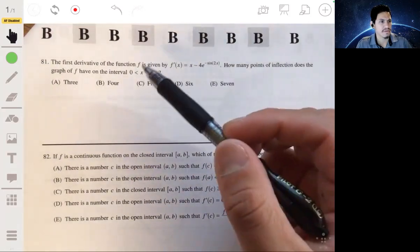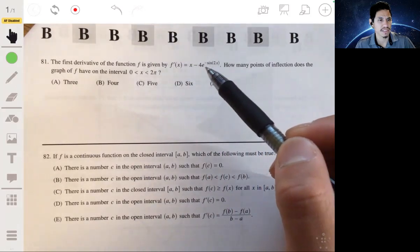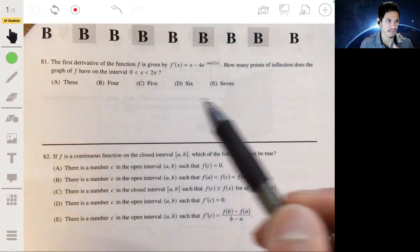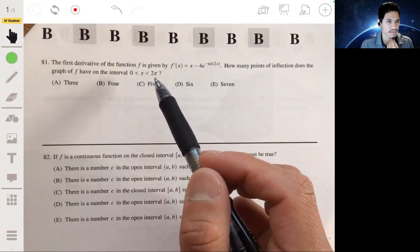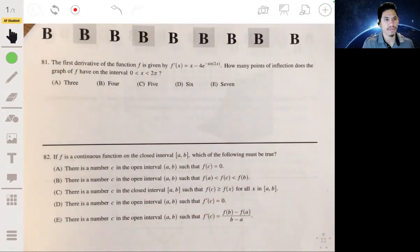All right, 81. The first derivative of the function f is given by f prime of x equals x minus 4e to the negative sine of 2x. How many points of inflection does the graph of f have on the interval from 0 to 2π? Okay, the best way is probably just to graph this, and let's take a look at the graph.